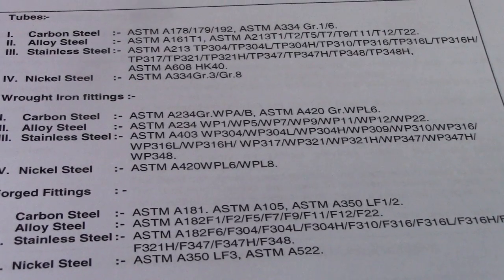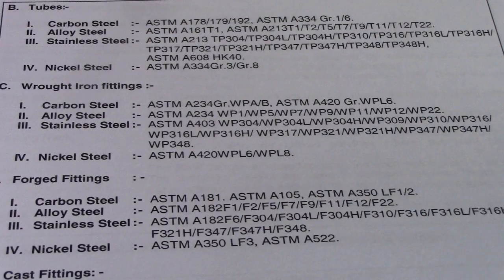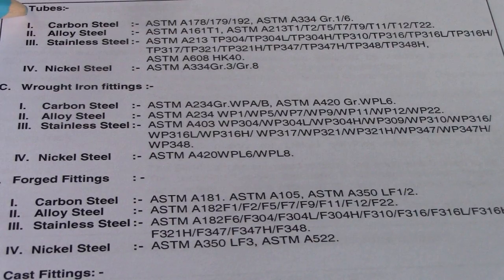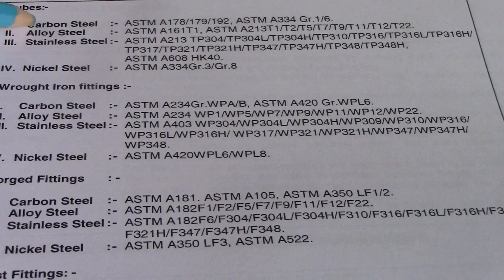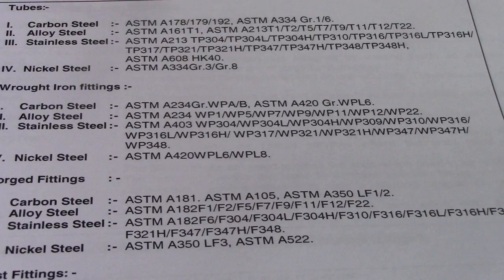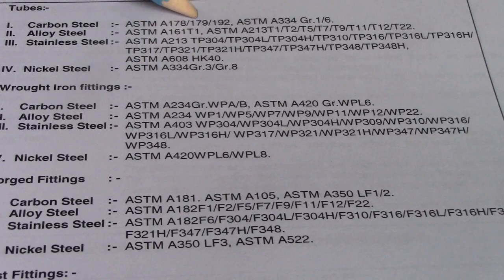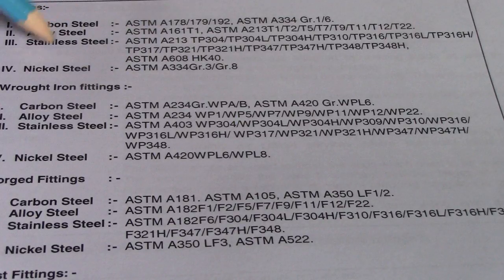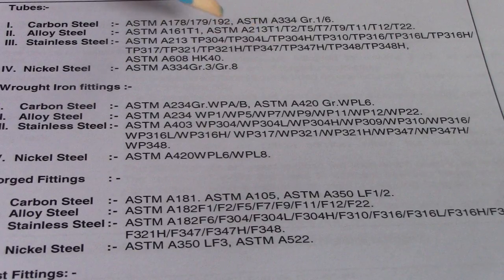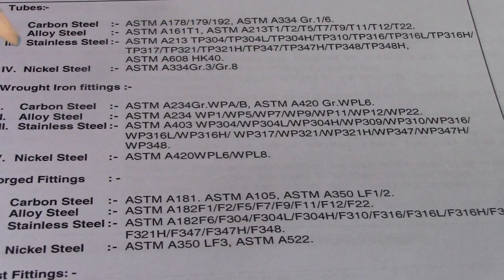This is for the tubes. Please read all the ASTM codes for this. For carbon steel: ASTM A178, A179, A192, and so on. For alloy steel: ASTM A161, T1. For stainless steel: ASTM A213 type 304, 304L. And nickel steel as well — so this covers the tubes.